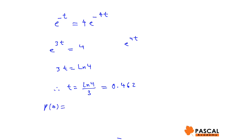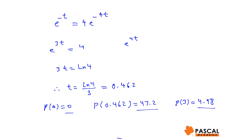Evaluating: P(0) = 0, P(0.462) ≈ 47.2, and P(3) ≈ 4.98. These values can be easily calculated using the population function. The maximum of these three numbers is 47.2, meaning the highest percentage of people spreading the rumor is 47.2%, and that occurs at t ≈ 0.462 hours.